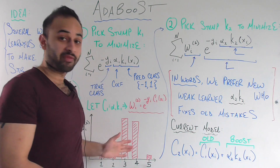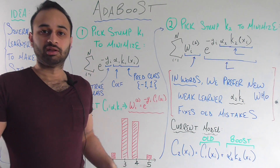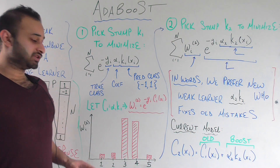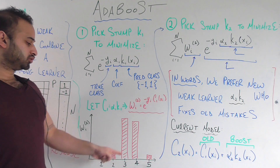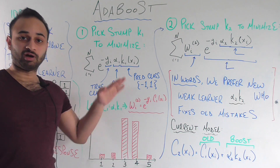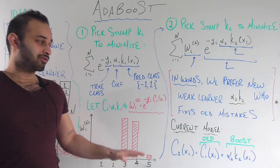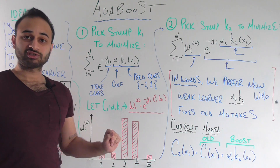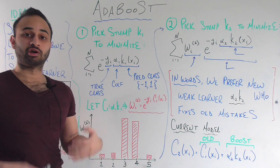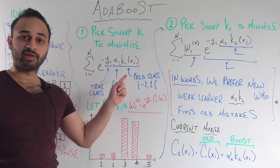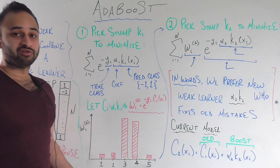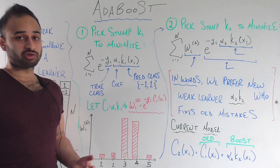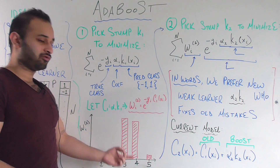The lower this weight is, the better this classifier did on the student. So here's a look at that graphically. Let's just say there are five students for simplicity. Looking at this graph, we see that students one, two, and five have very low weights or very low exponential losses, which means that we're doing a good job. But it's pretty obvious we're doing a bad job on students three and four.